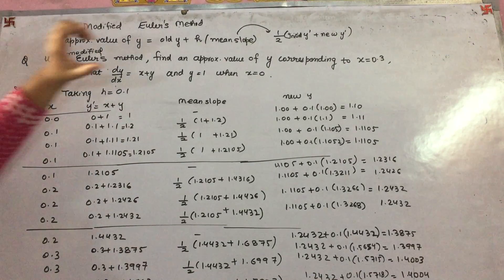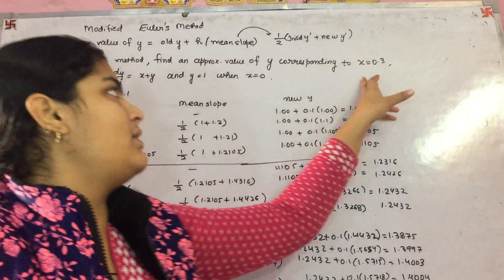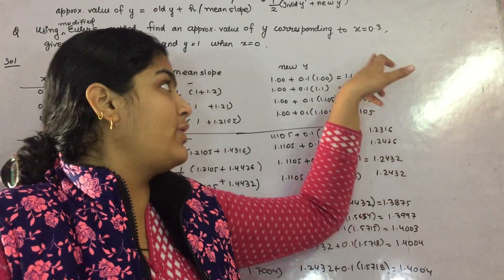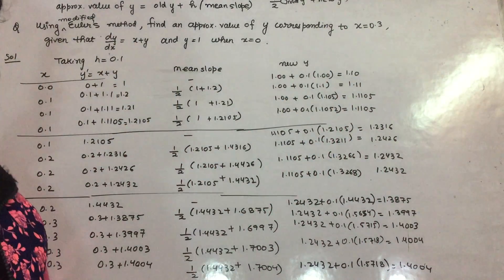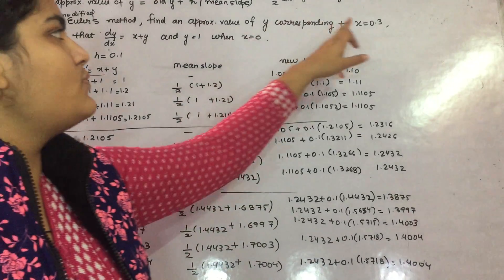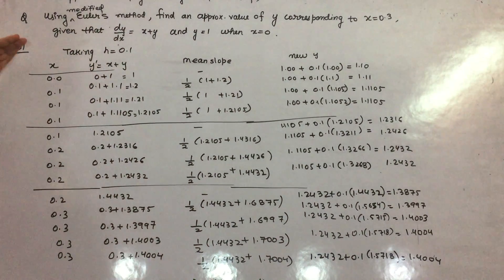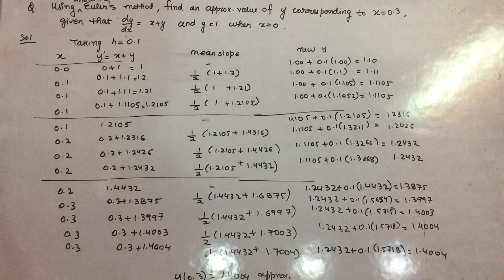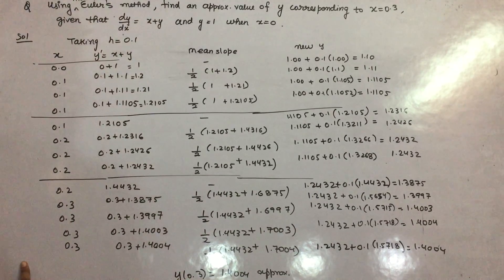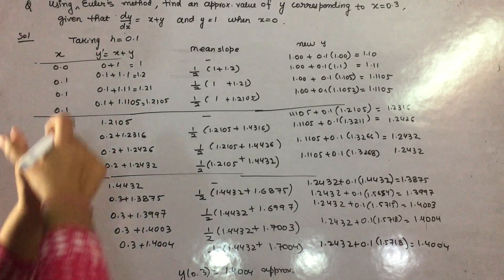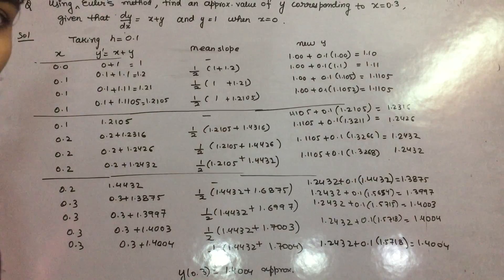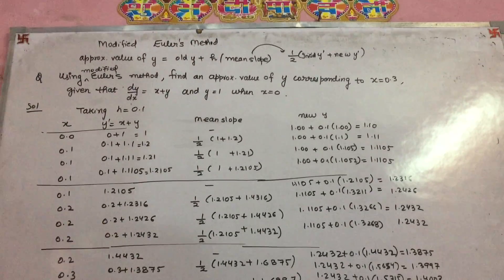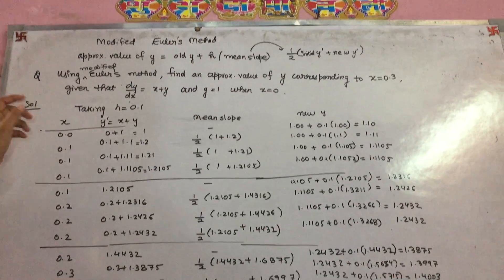This is the same question, but the limit changes — the initial point of x changes, and the final point is 0.3, so the interval is from 0 to 0.3. We are taking the step size h as 0.1. The table may look large, but it is very simple to work through.